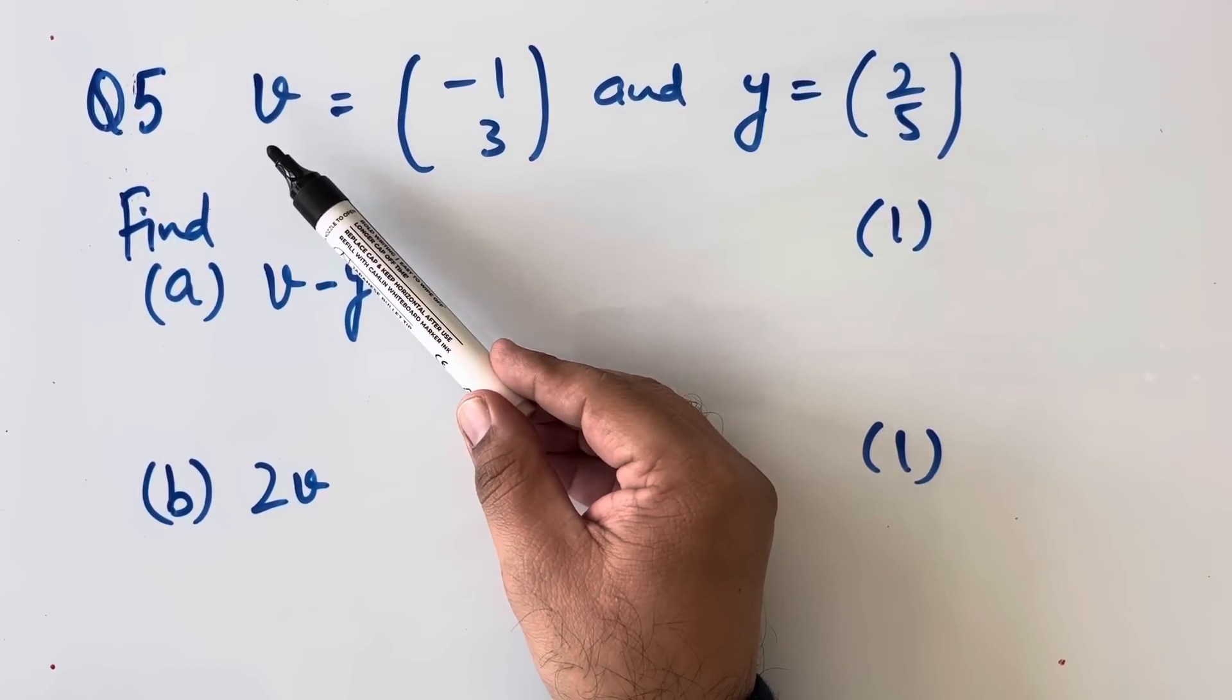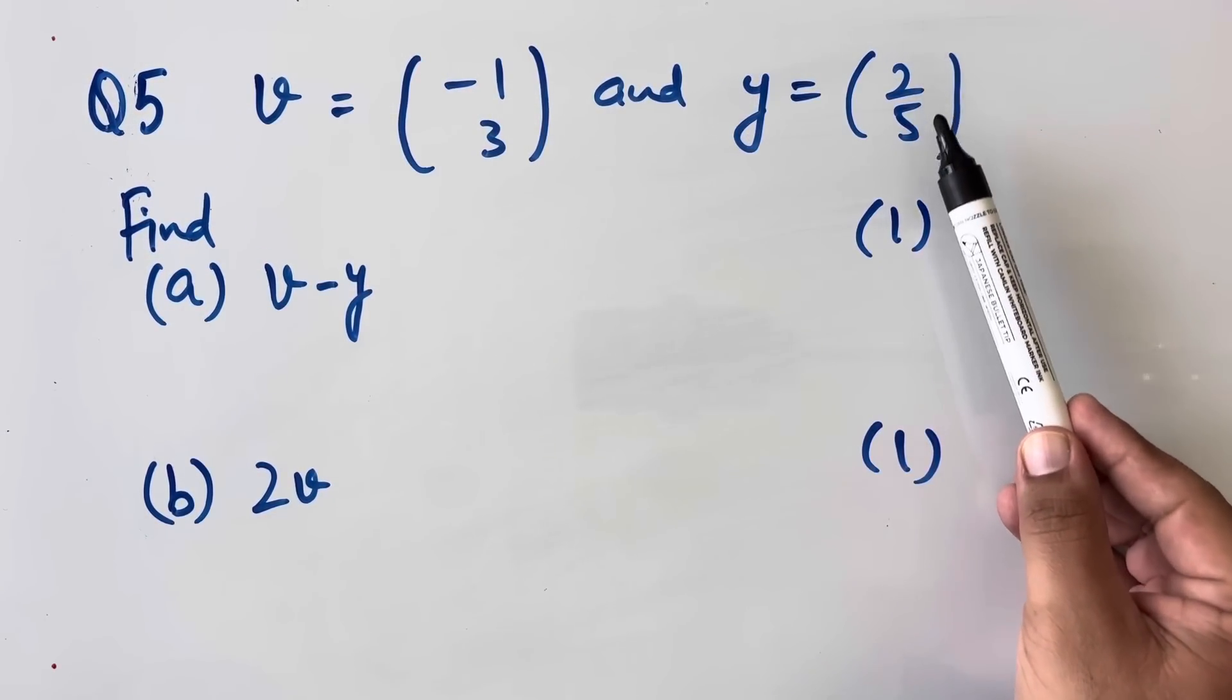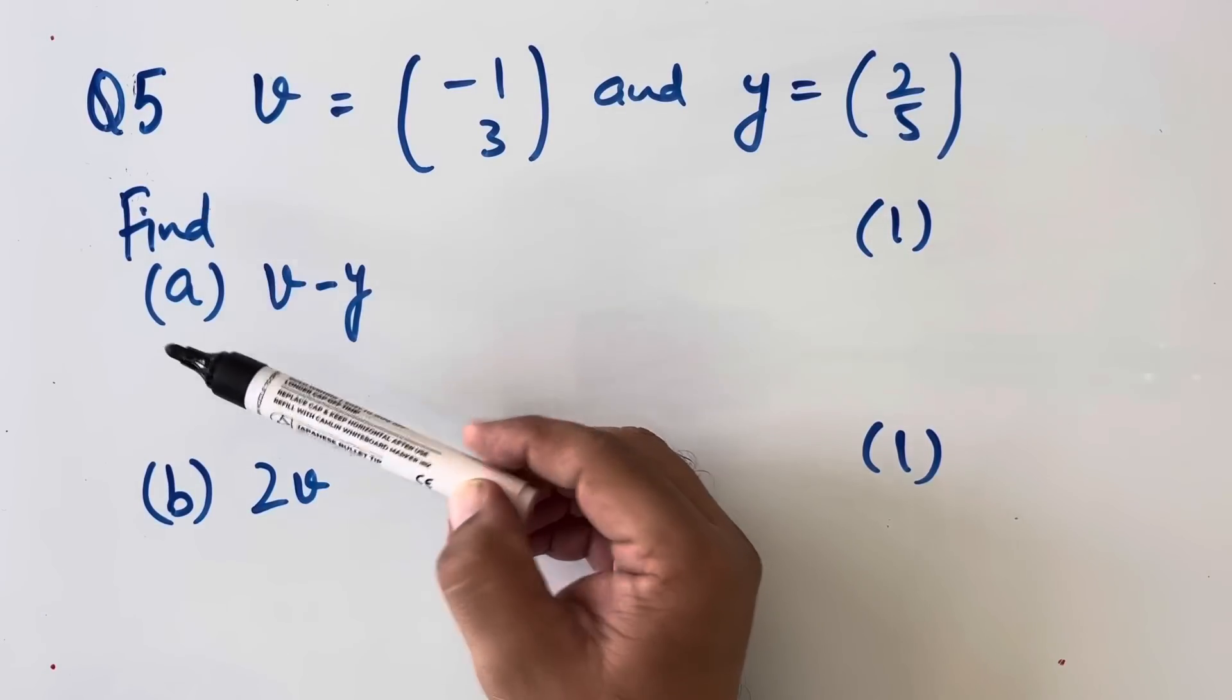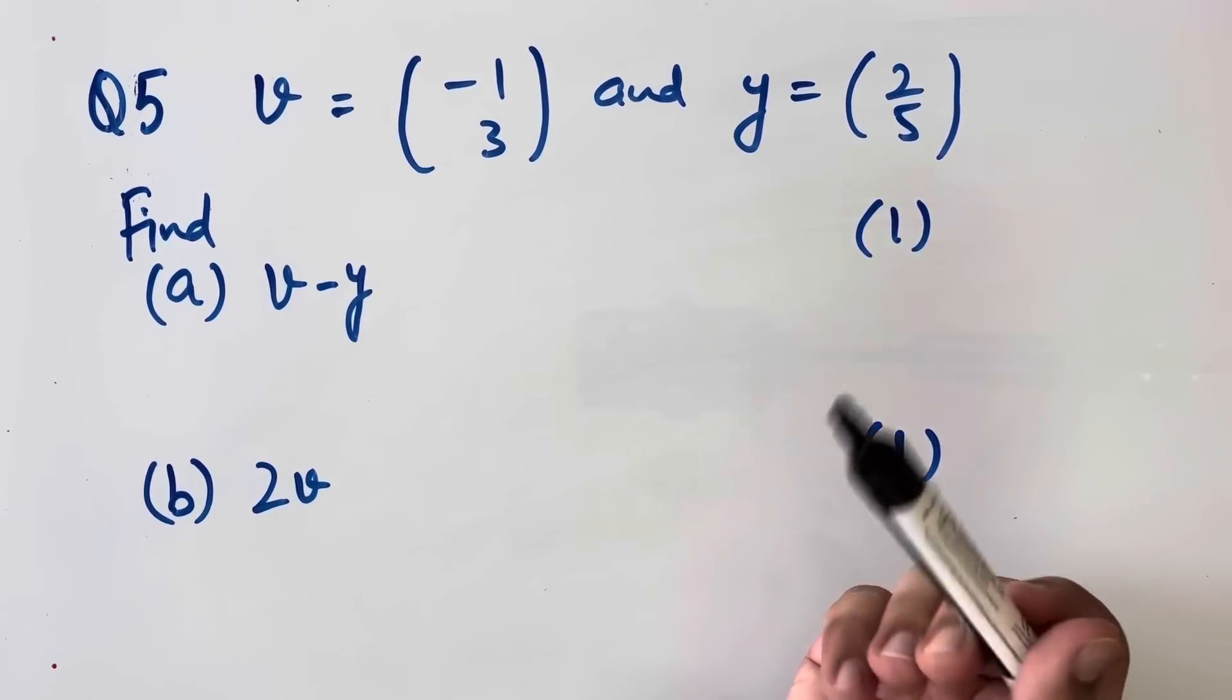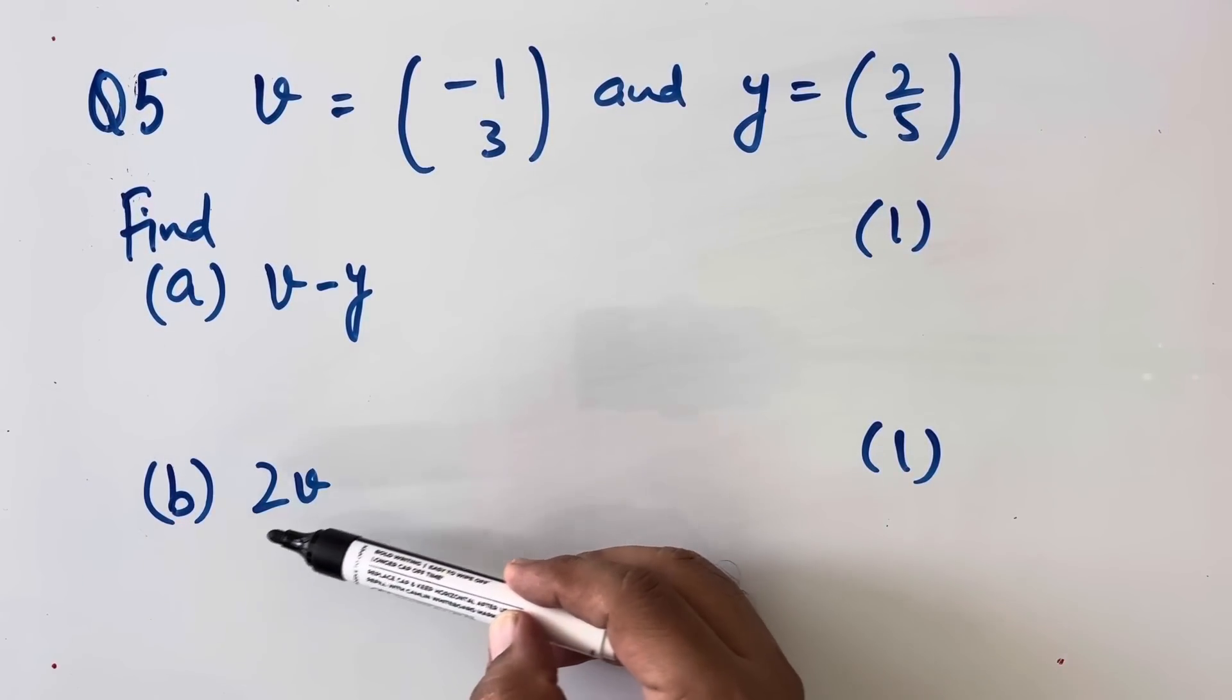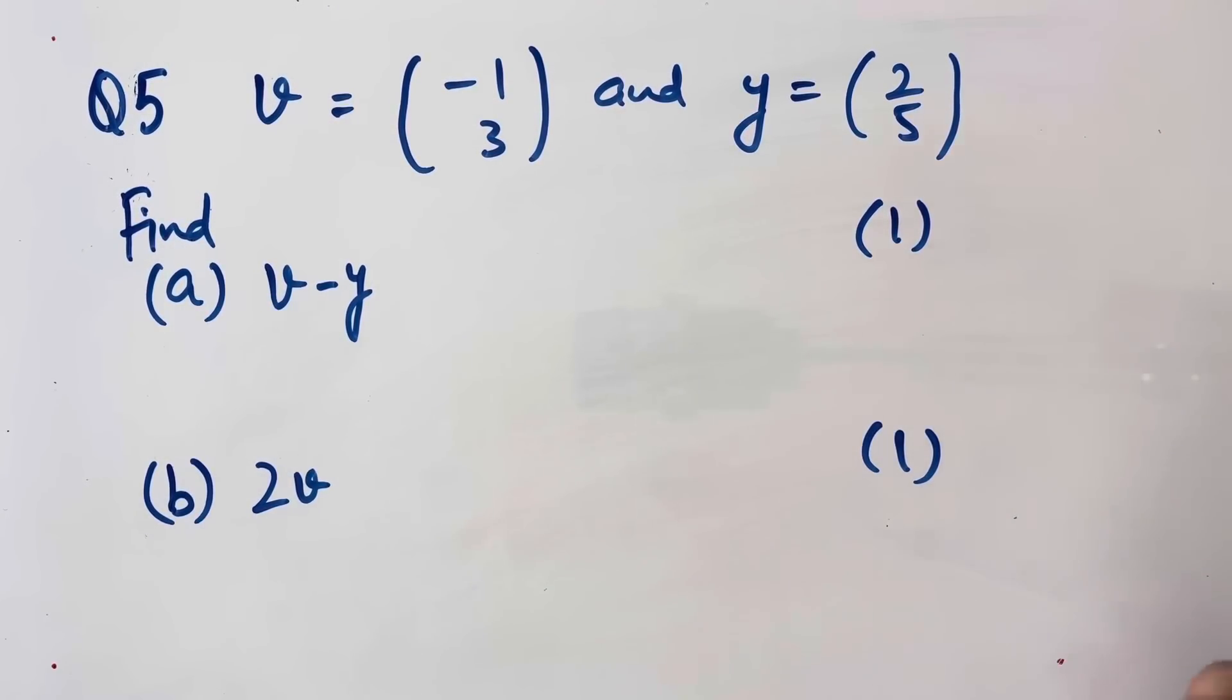Now vector v is given (-1, 3) and y is given (2, 5). We have to find v minus y and part b, 2v. This is of 1, 1 mark each.